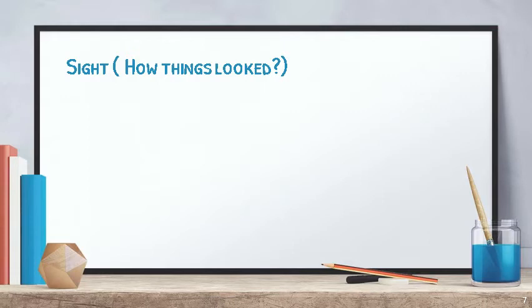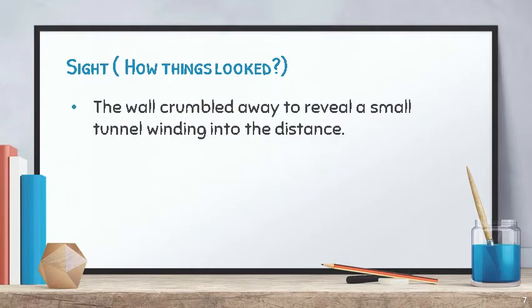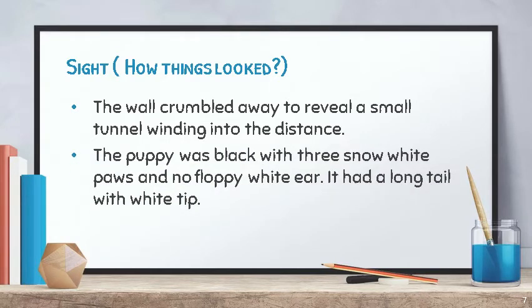Sight — how things looked. 'The wall crumbled away to reveal a small tunnel winding into the distance.' 'The puppy was black with three white paws and one floppy white ear. It had a long tail with a white tip.'